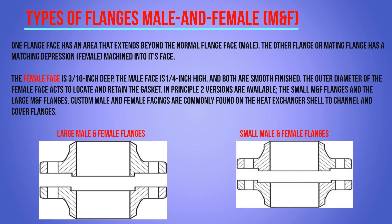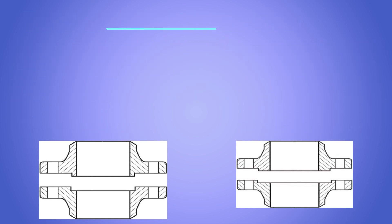Male and female flanges: one flange face has an area that extends beyond the normal flange face — called the male — and the mating flange has a matching depression called the female machined into its face. The female face is 3/16 inch deep; the male face is 1/4 inch higher, and both are smooth finished. The outer diameter of the female face acts to locate and retain the gasket. Two versions are available: smaller and larger male and female flanges. Custom male and female facings are commonly found in heat exchanger shell-to-channel and cover flanges.